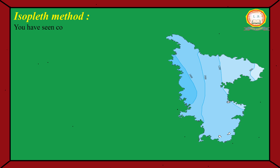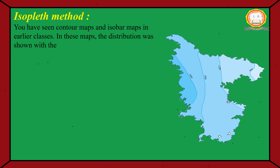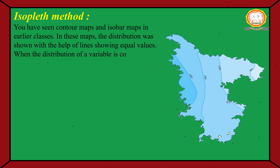Isoplat Method. You have seen contour map and isobar map in earlier classes. In these maps, the distribution was shown with the help of lines showing equal values. When the distribution of a variable is continuous, the isoplat method is then used to show its distribution.